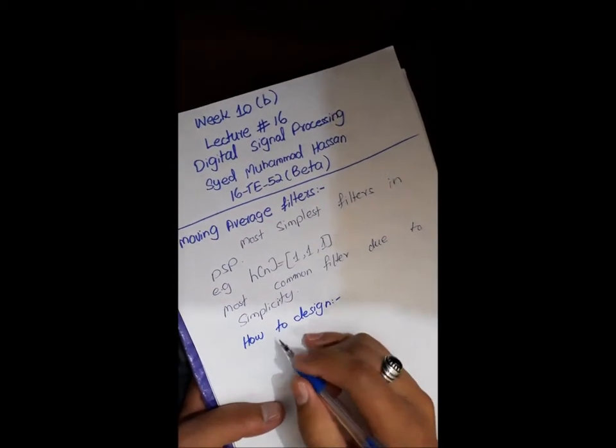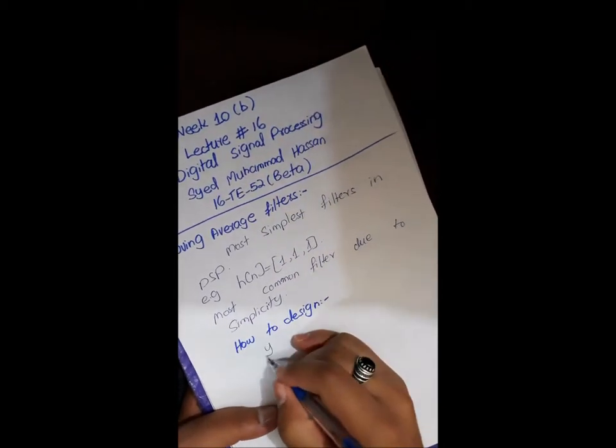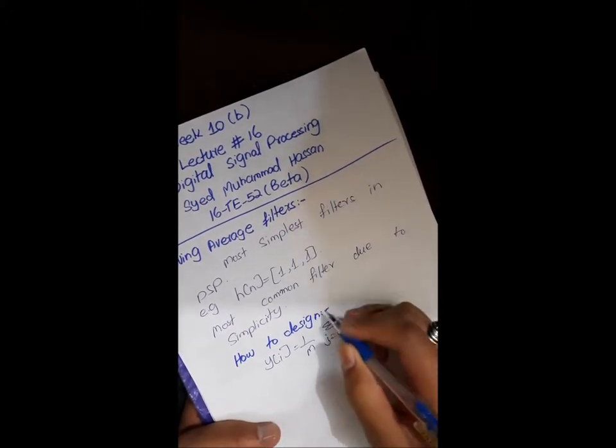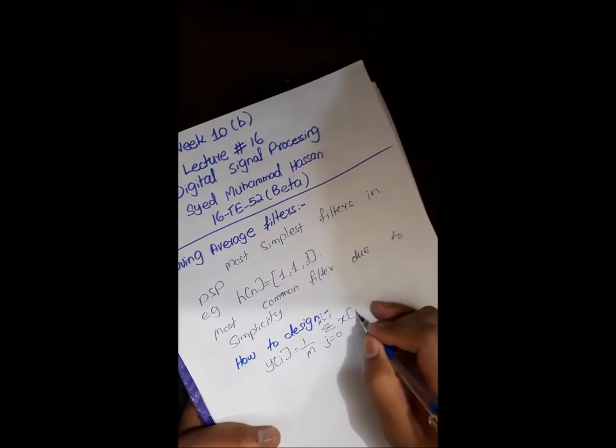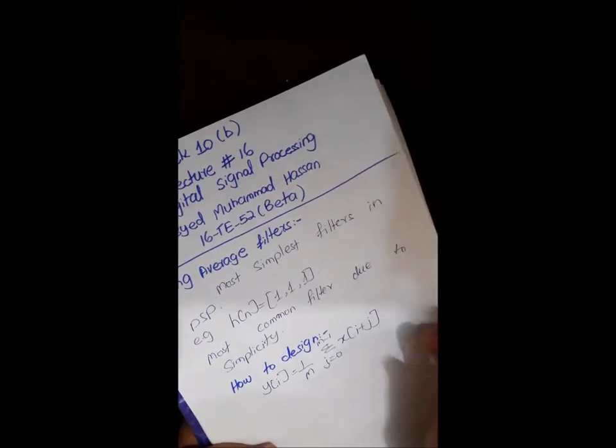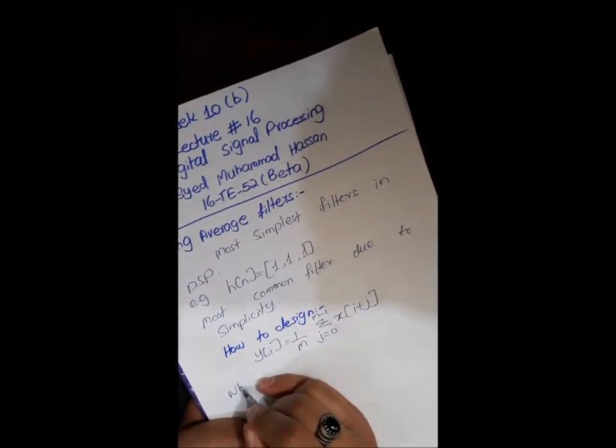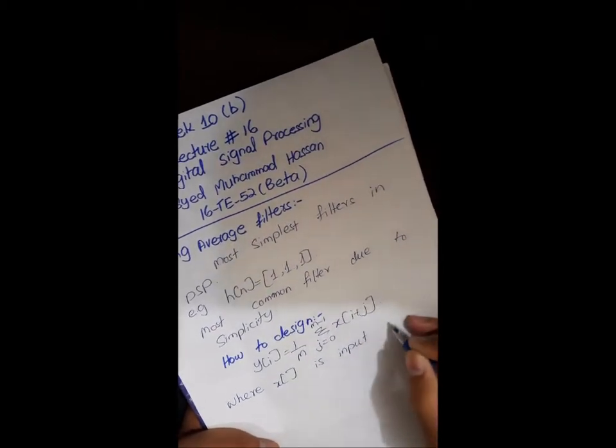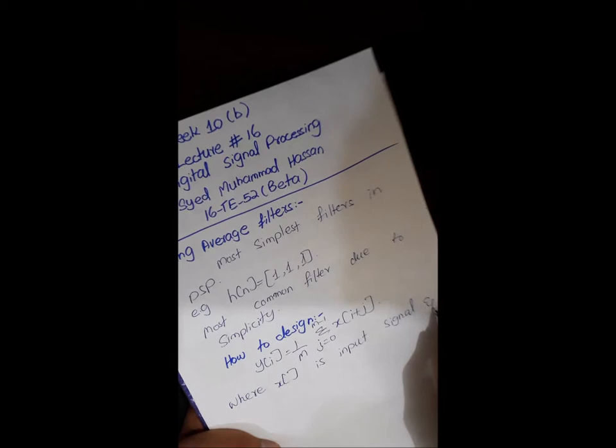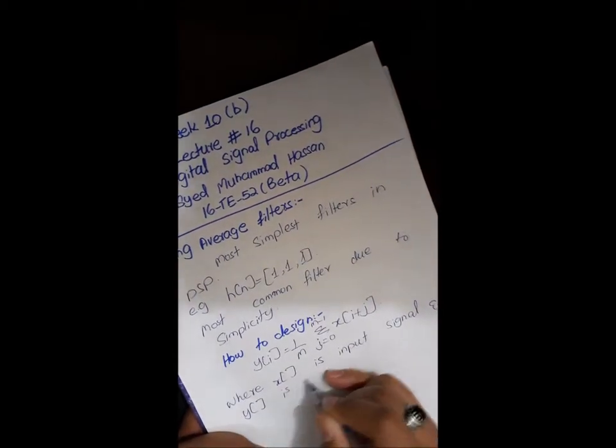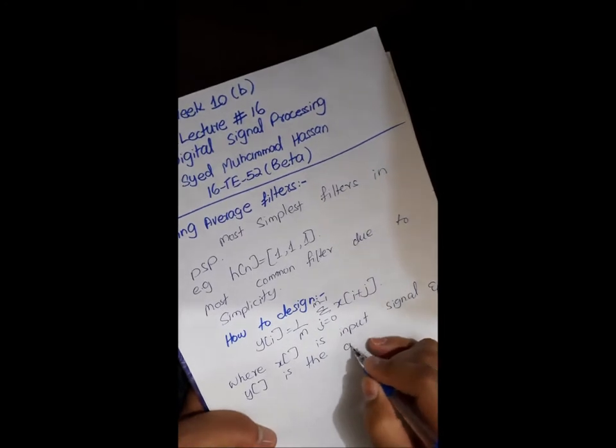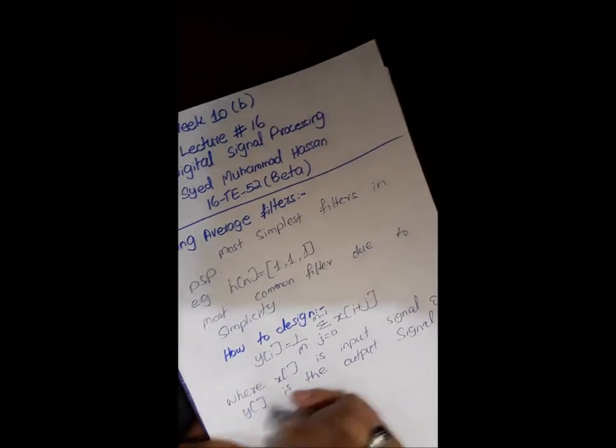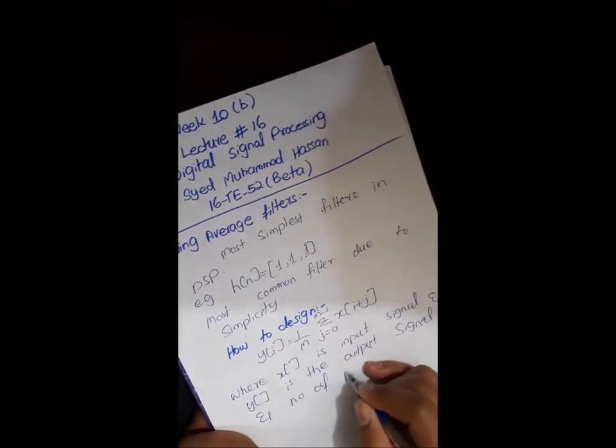Now we will see how to design. These are given by a formula: y of i is equal to 1 by m, summation j is equal to 0 to m minus 1, x of i plus j.